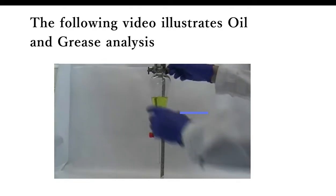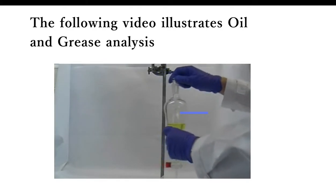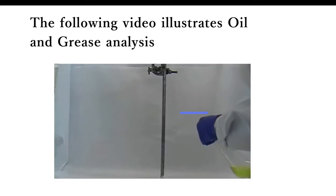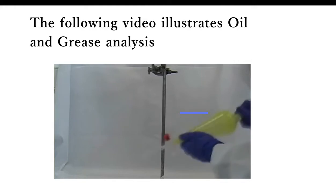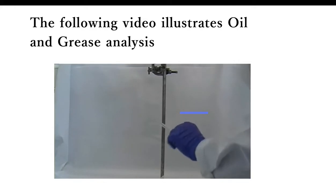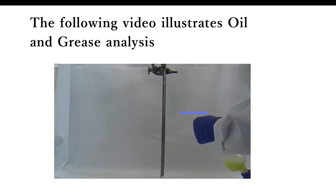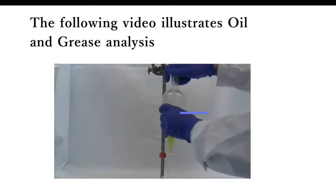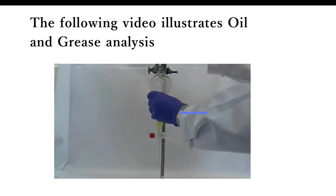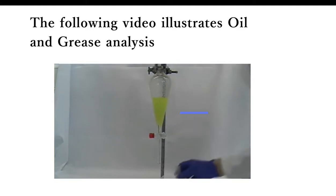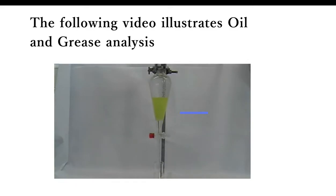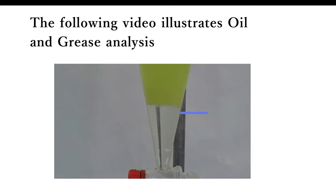After removing the funnel, stopper the separatory funnel and hold the stopper firmly in place while you turn it over. As you can hear, some pressure builds up that needs to be vented. The same happens after you shake the solution. After venting and swirling a little to aid phase separation, clamp it again in the retort stand. Importantly, remove the stopper — otherwise pressure will build up and force the solution out at the sides. Phase separation takes some time; you must be patient until no further separation is visible. The time required depends on the nature of the solute and solvents.